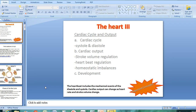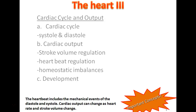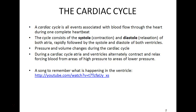Hello and welcome to the cardiovascular system. This is the third section in our discussion on the human heart. Here we're going to look at two main ideas: cardiac cycle and cardiac output. As always, we'll touch on some homeostatic imbalances and then briefly on the development of the human heart.